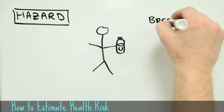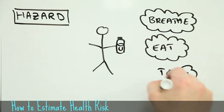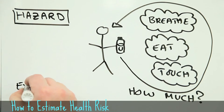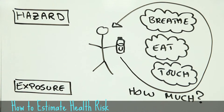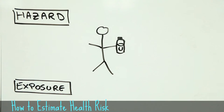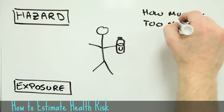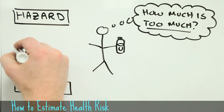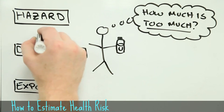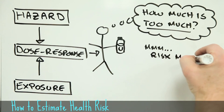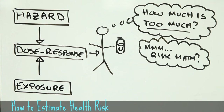So the next thing we need to know is how much Unobtanium you're exposed to, including how it gets into your body and where it goes once it gets there. We're getting close to being able to estimate risk at this point, but there's still something missing. We need to know how much Unobtanium causes what sort of effect. If we can measure or estimate this, we can connect hazard and exposure to the probability of harm occurring — risk, in other words.